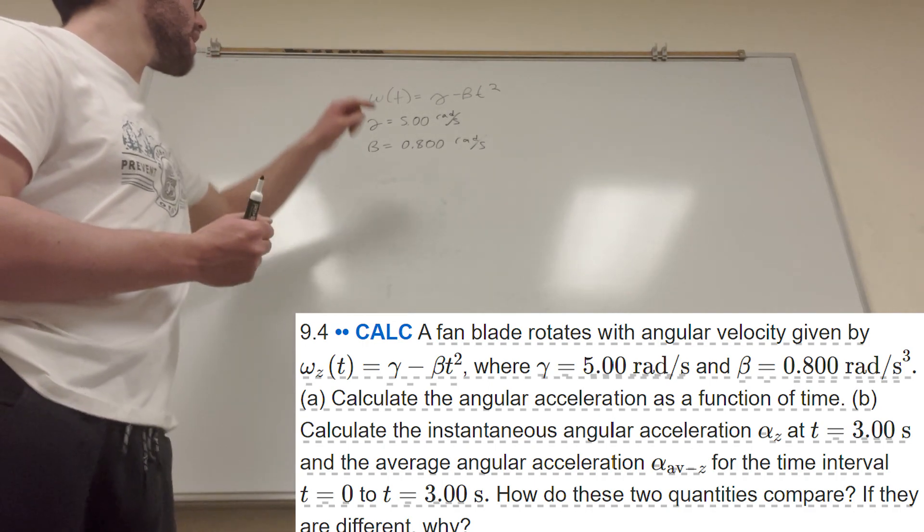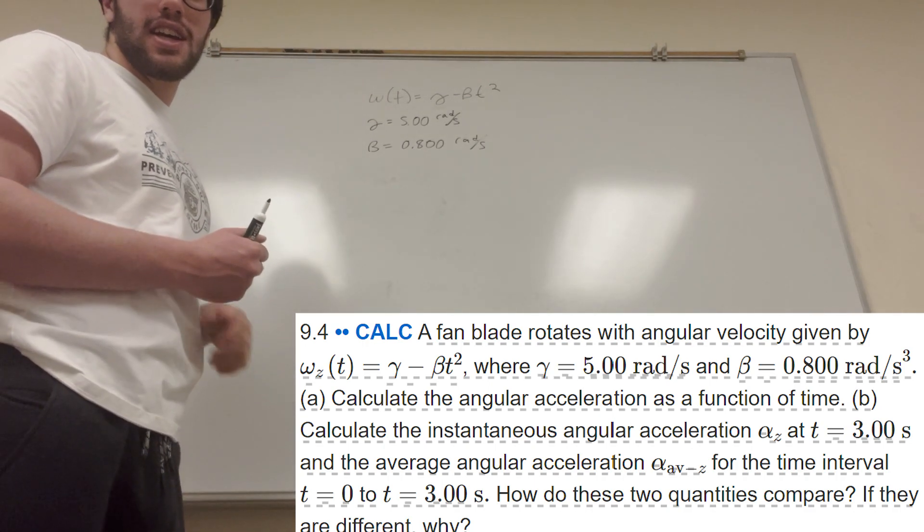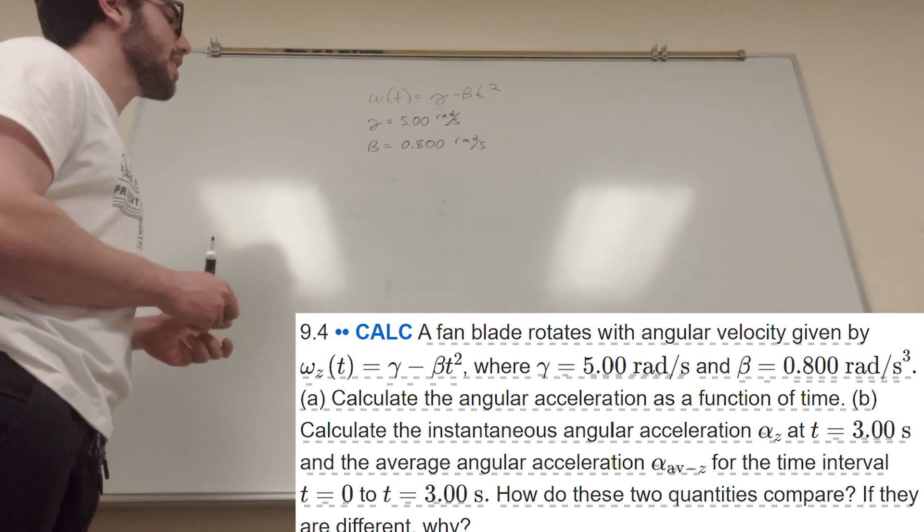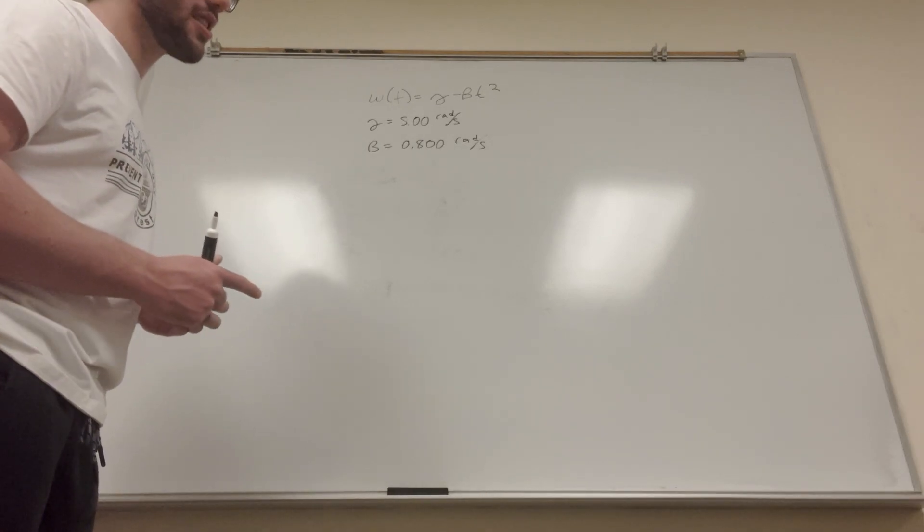So it gives you a fan blade is rotating with angular velocity, and it gives you what gamma and beta are, and it wants you to find, okay, first, angular acceleration.